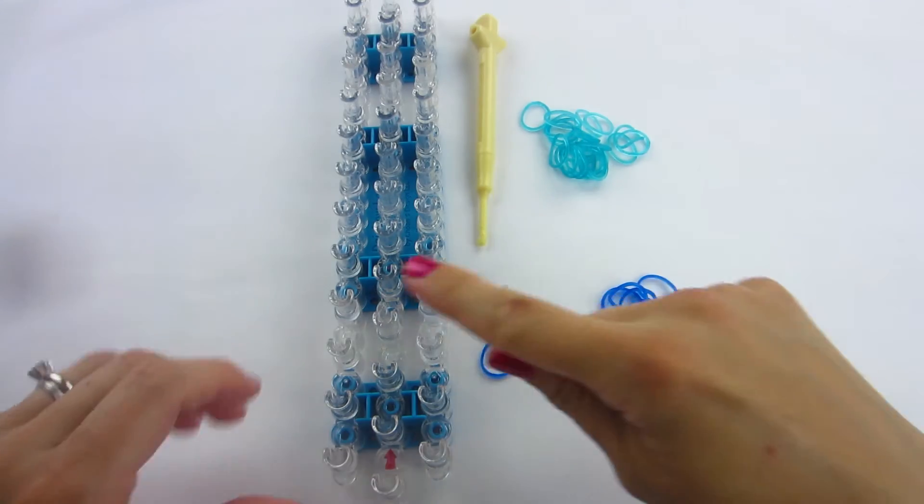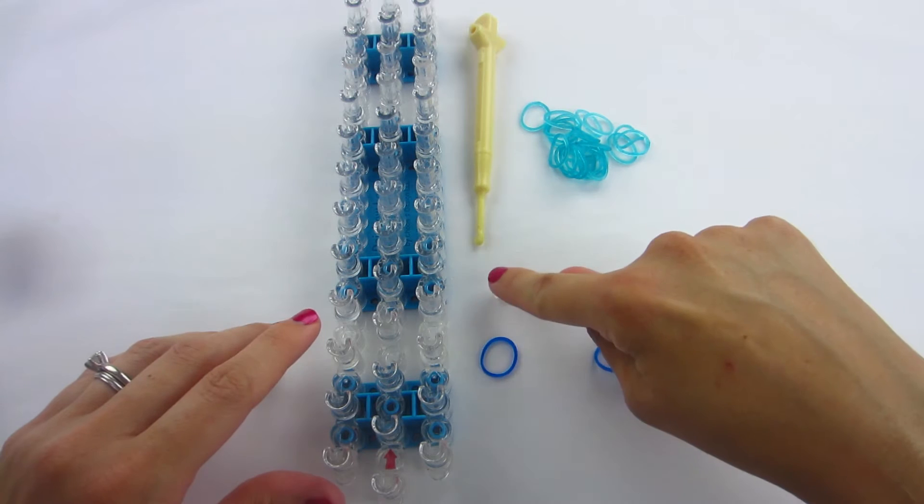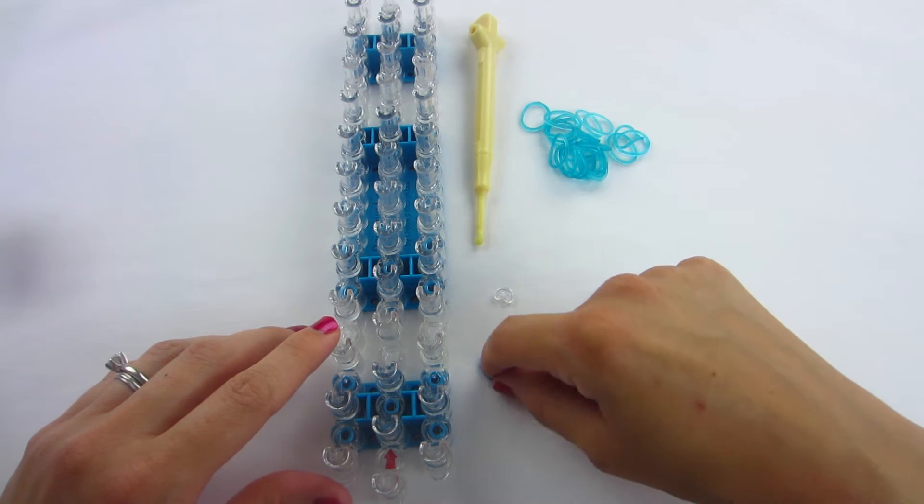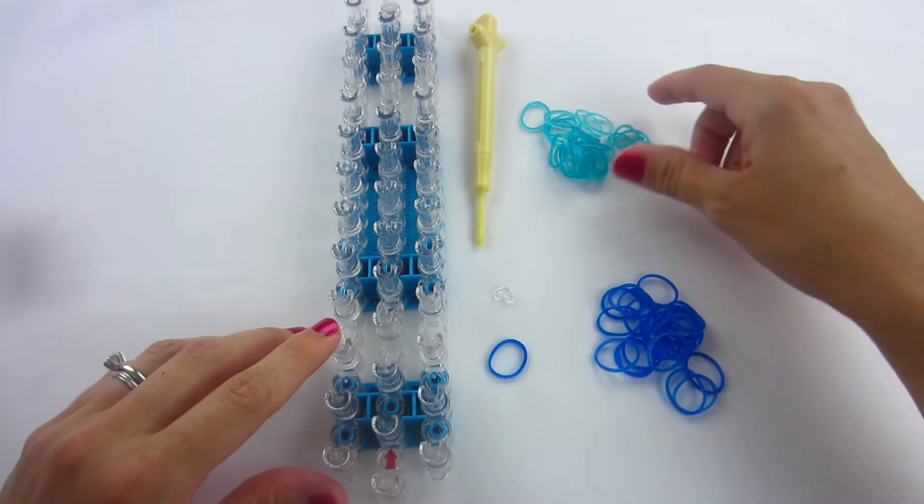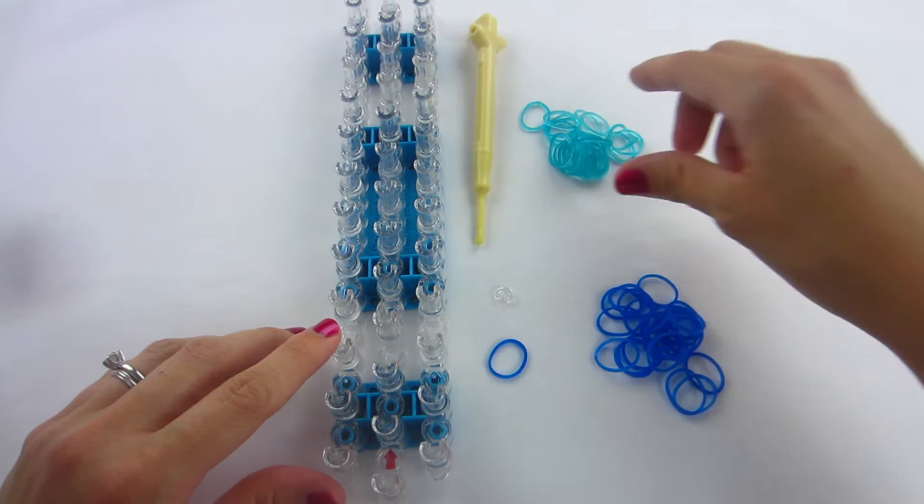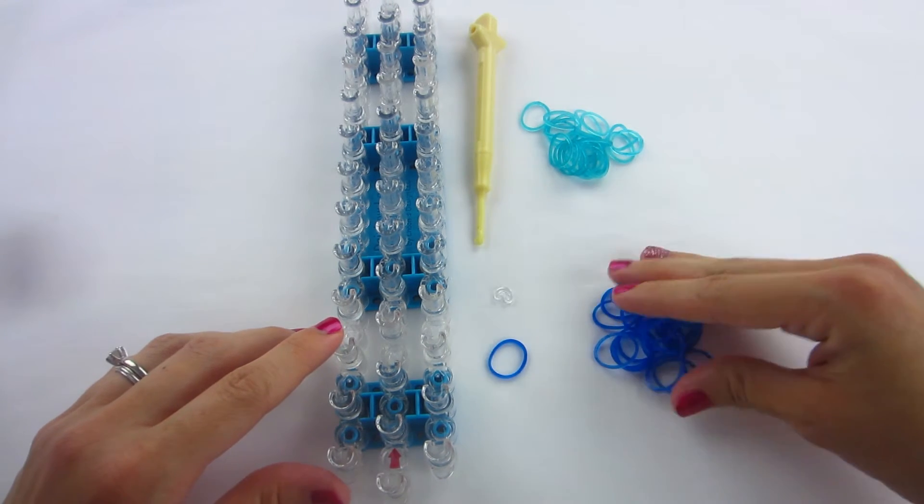For this bracelet you will need one loom, one hook, one c-clip, one blue finishing band, 25 aqua bands, and 24 blue bands.